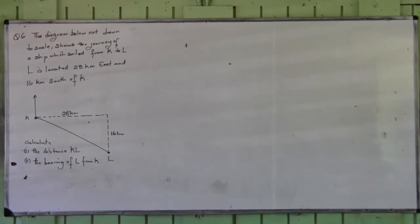Alright, let's have a look at our first version. It says the diagram below, not to scale, shows the journey of a ship which sailed from K to L.